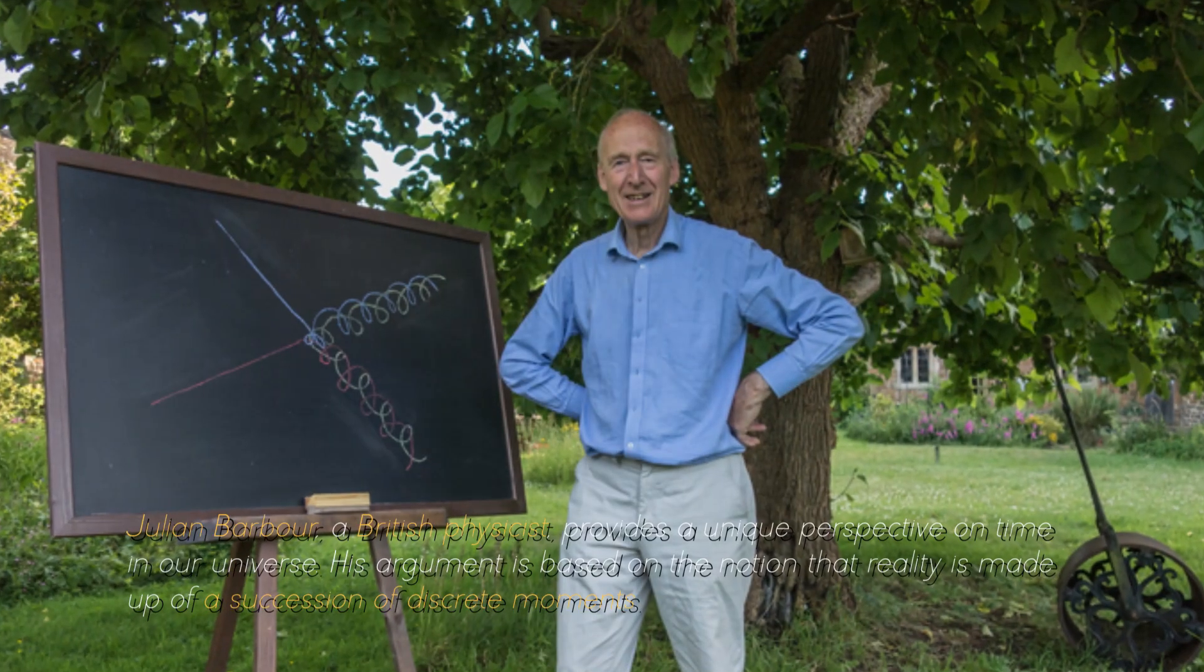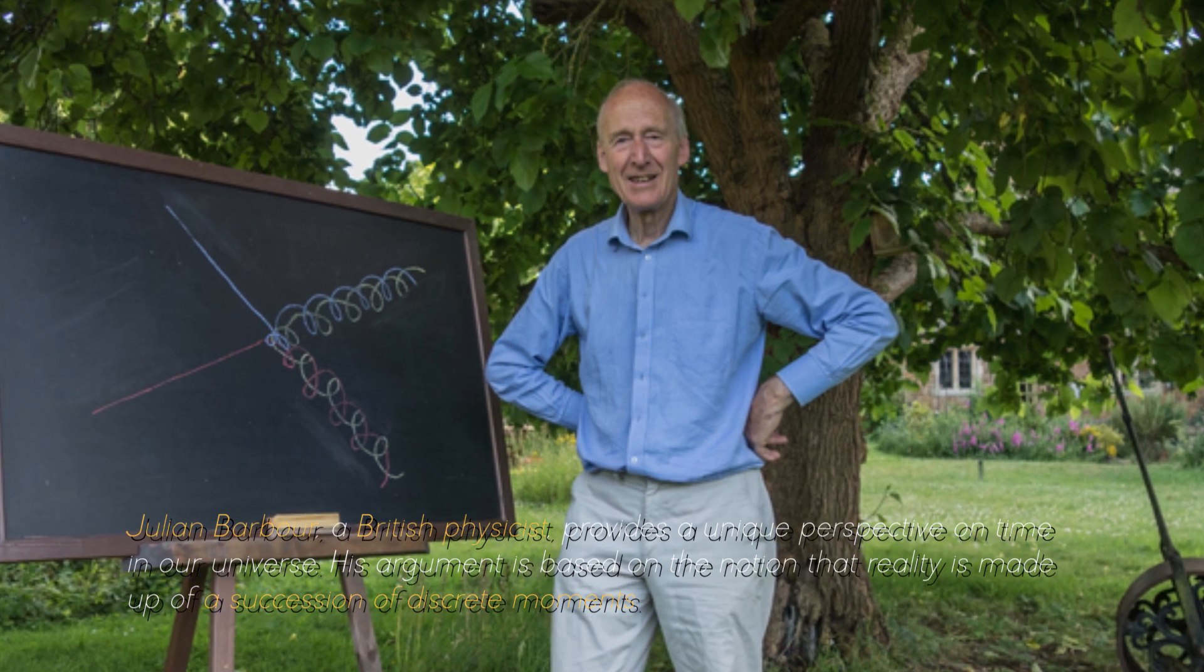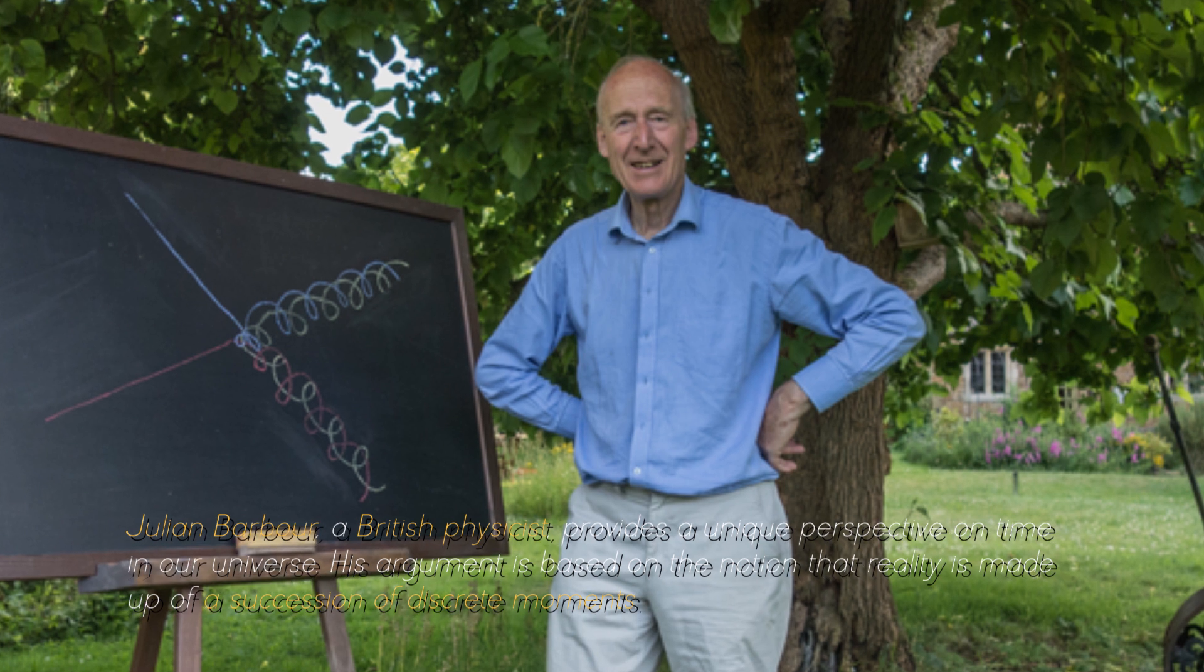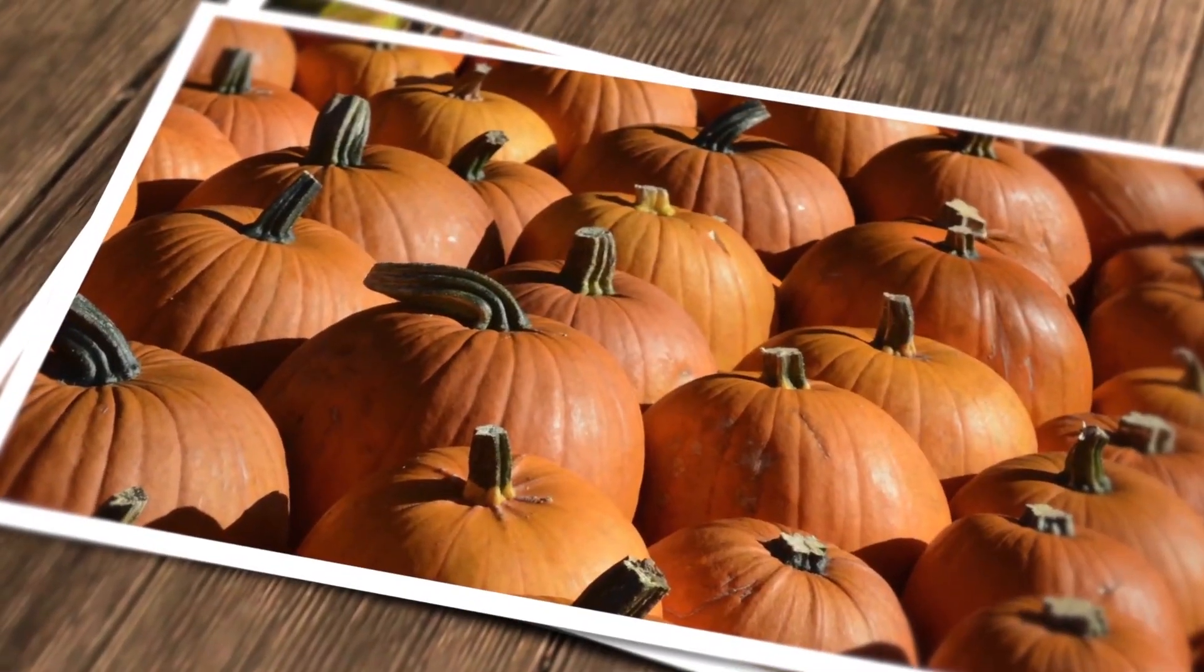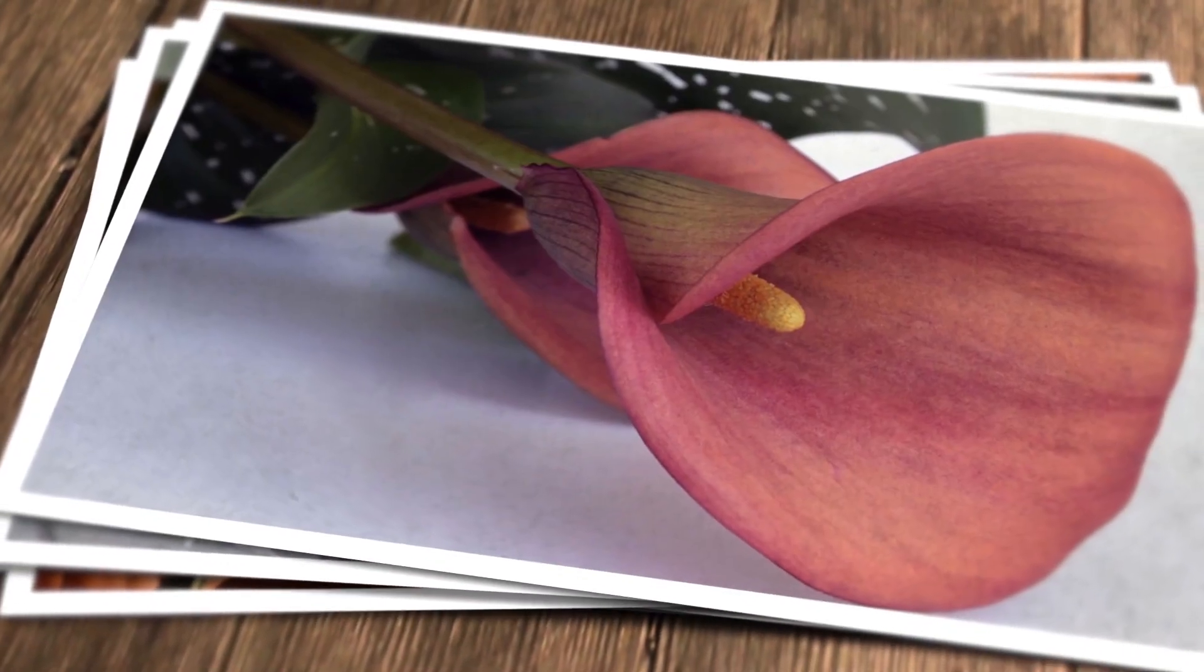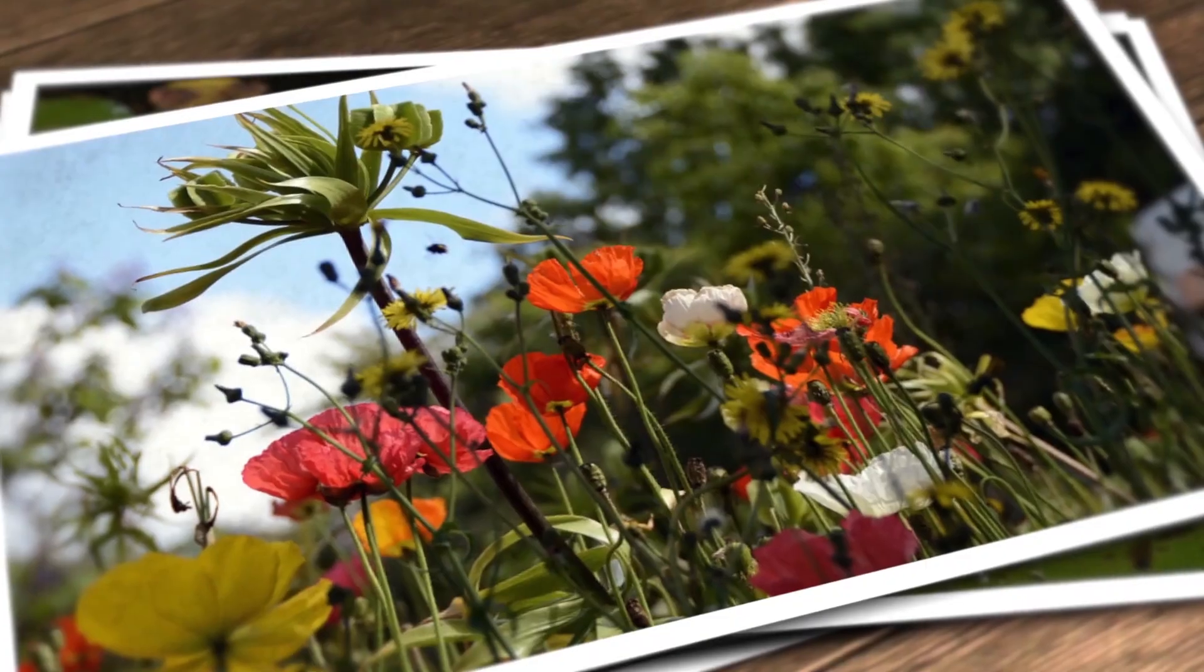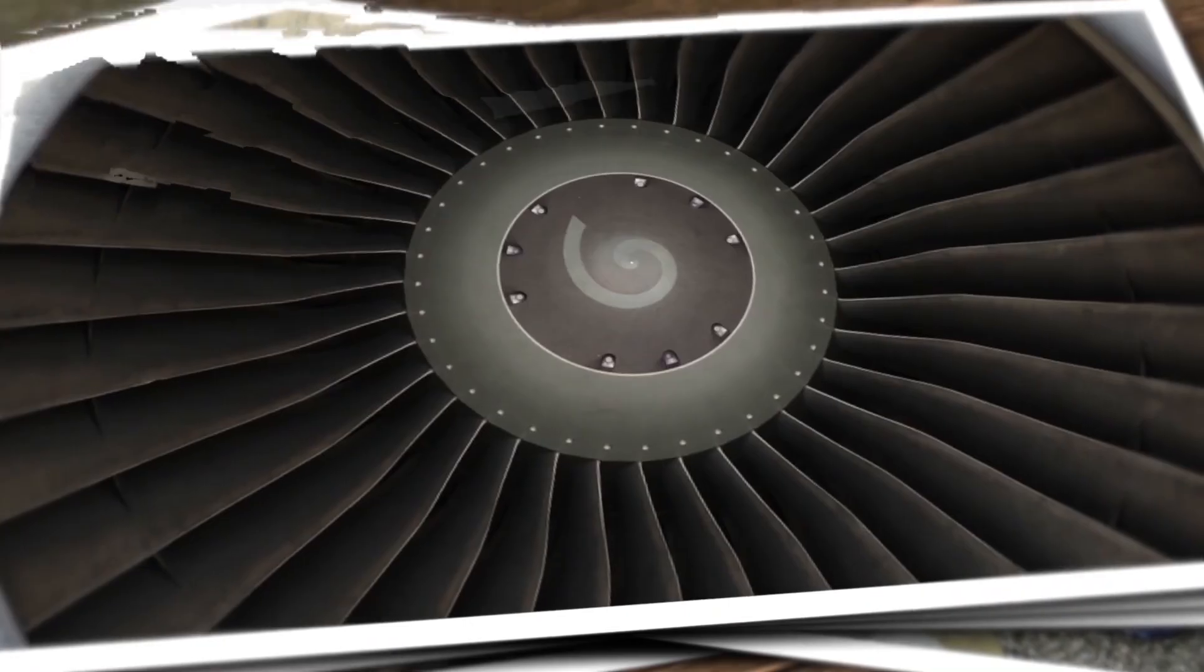Julian Barber, a British physicist, provides a unique perspective on time in our universe. His argument is based on the notion that reality is made up of a succession of discrete moments, comparable to individual photographs in an album, with each image representing a unique instance. For Barber, our perception of the past is reduced to a construct that relies on the memory stored in our brain, raising the possibility that the notion of the past is, in essence, an illusion.